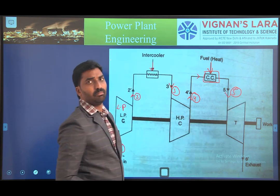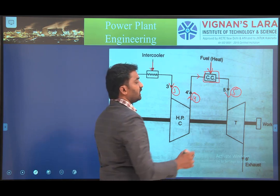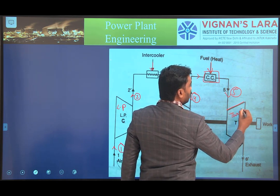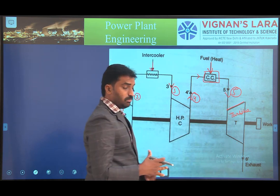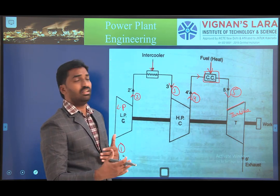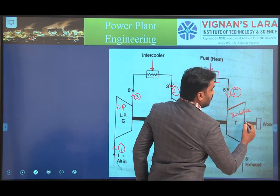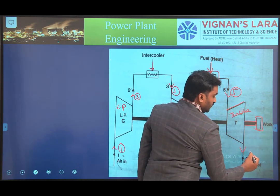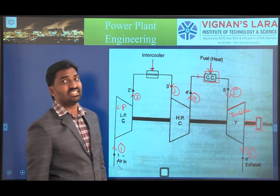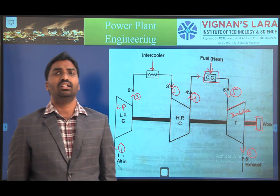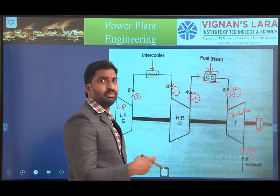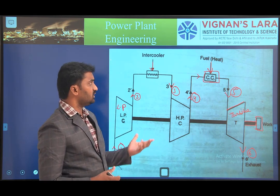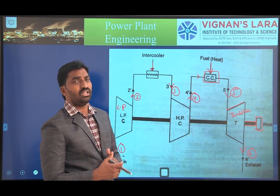After combustion, high pressure and high temperature air is sent to the turbine, where the air expands, causing the turbine to rotate and produce work. The exhaust gases are then discharged to the atmosphere since this is an open cycle system. This intercooling technique gives better efficiency compared to normal operating conditions, though we are still wasting the exhaust gas temperature.